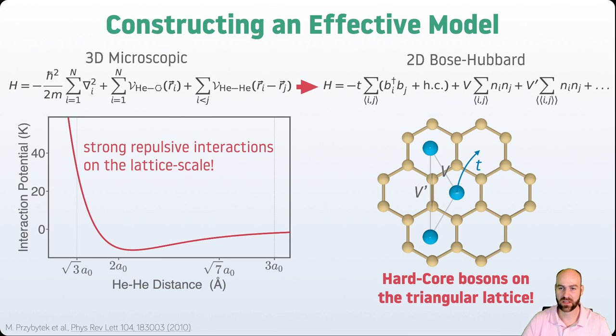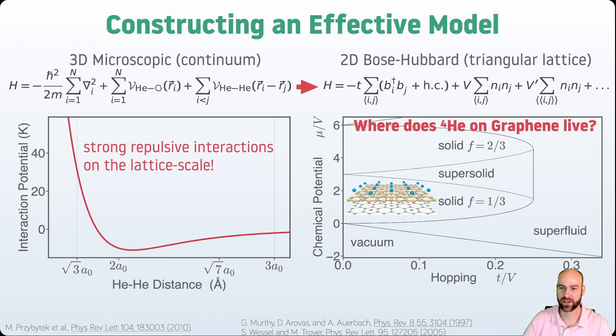The nice thing about the hard-core Bose-Hubbard model, especially on the triangular lattice, is that its phase diagram is well known, both in mean field theory as shown here, and also quantum Monte Carlo essentially gives the same results. In addition to these commensurate solid phases like the one observed for helium on graphene, there are approximate superfluid and even supersolid phases.